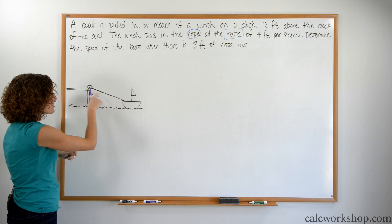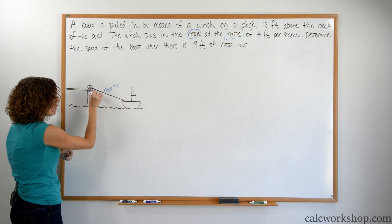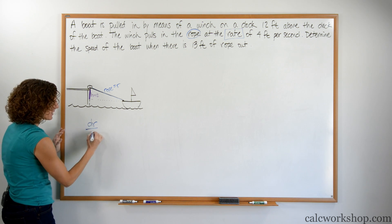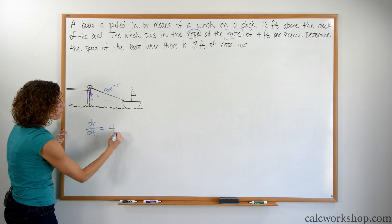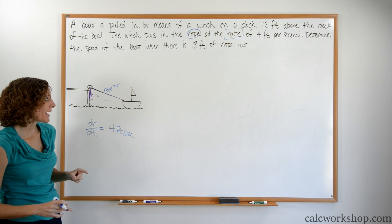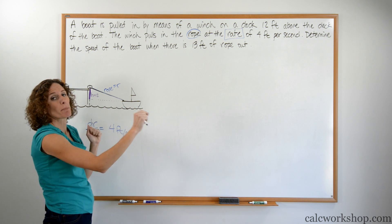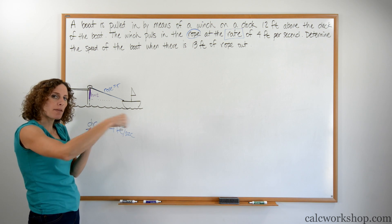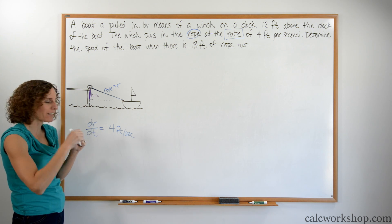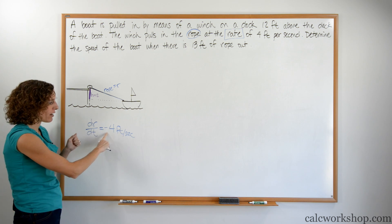If we say this is r, which is our rope, we know that this rate, this derivative, is getting pulled in. The derivative of the rope is 4 feet per second. The question is, is it positive or negative? If the rope is way far out and the boat is going away from the dock, the rope is getting bigger. But if the winch is pulling it in and the boat is getting closer, the rope is getting smaller. The distance is getting smaller, which means we have a negative rate. It's getting pulled in at the rate of negative 4 feet per second.